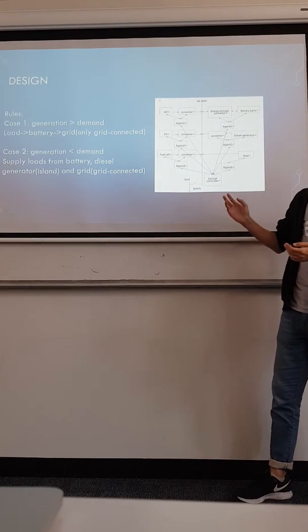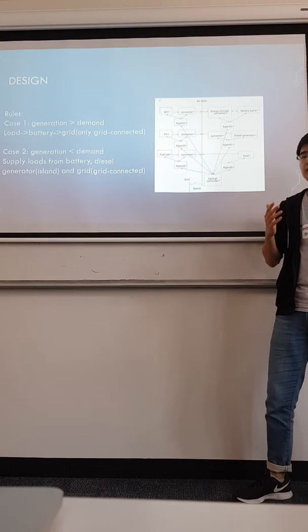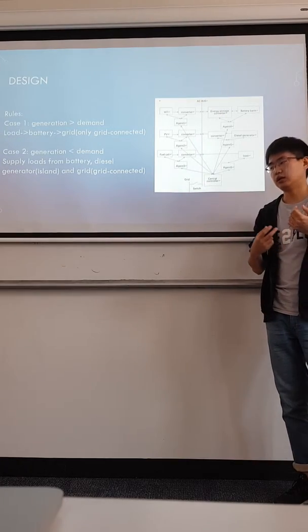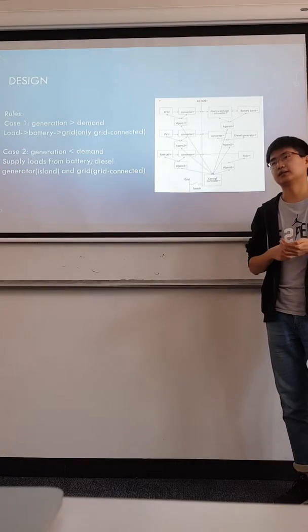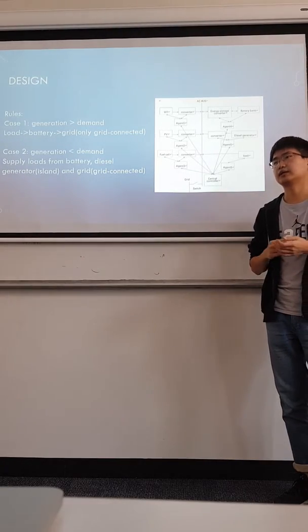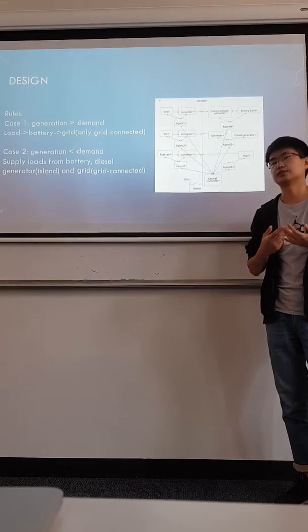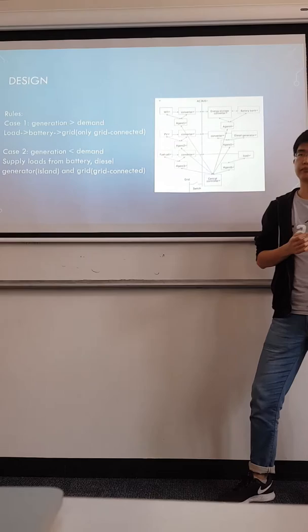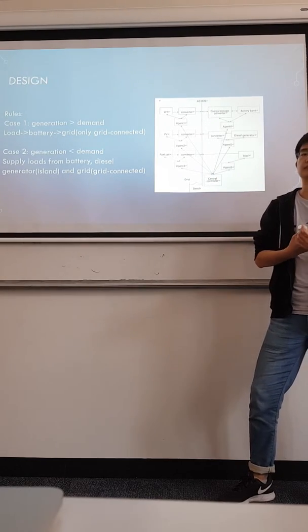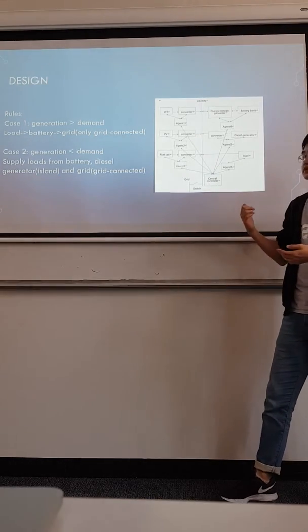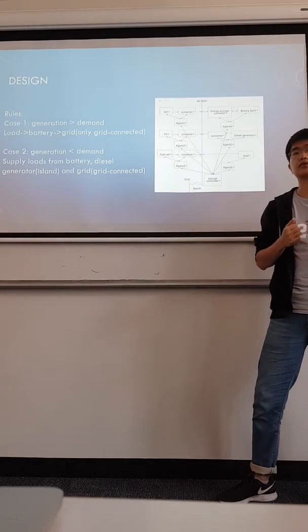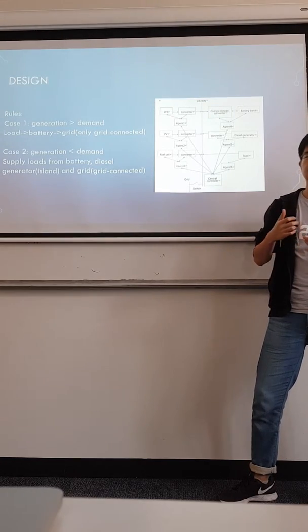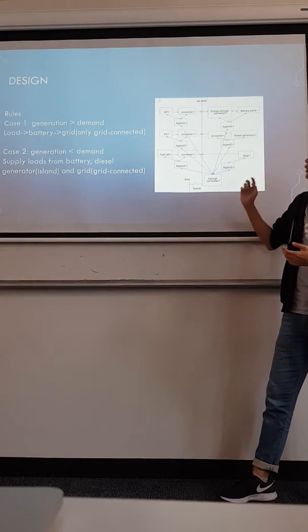Agent 4 is to determine whether to charge or discharge the battery based on the load demand and state of charge, and also total generation. Agent 5 will only be used when the microgrid is in island mode. Agent 6 will calculate the whole load demand and send it to the central controller.